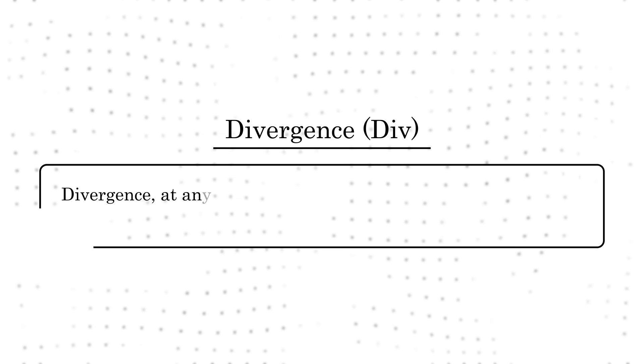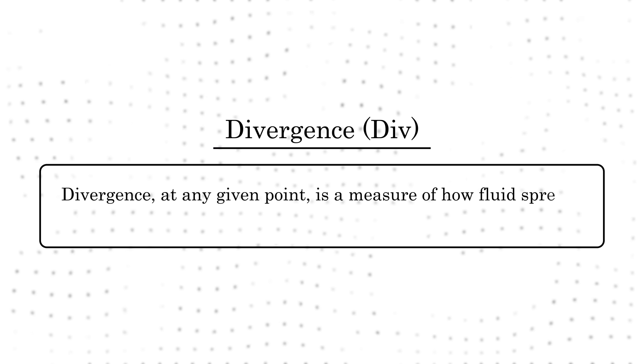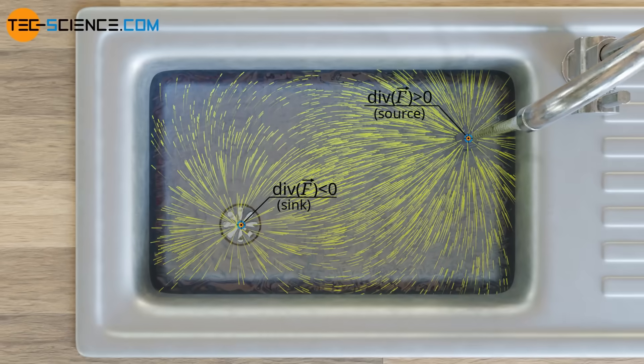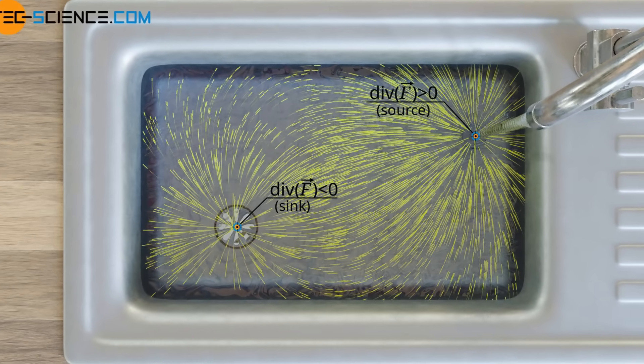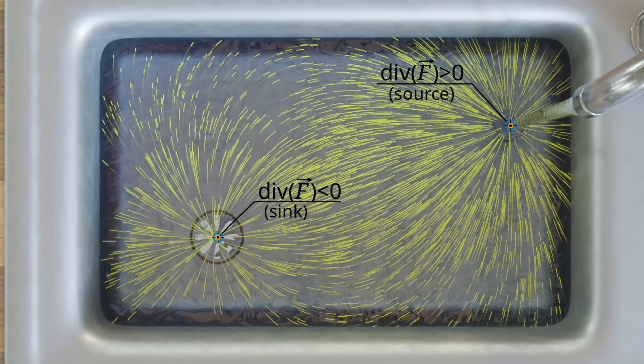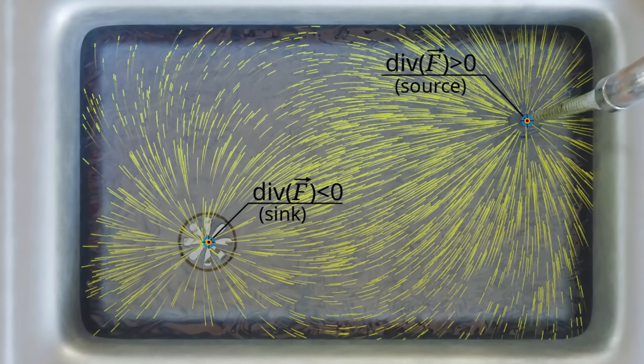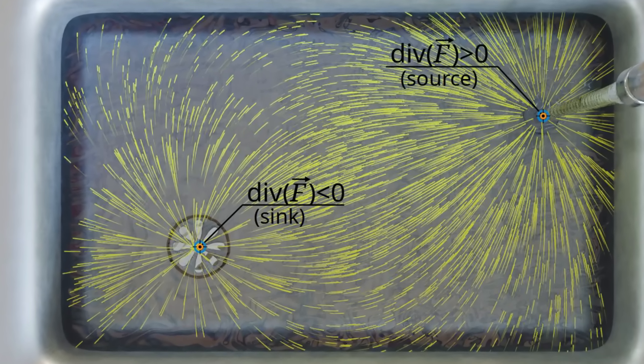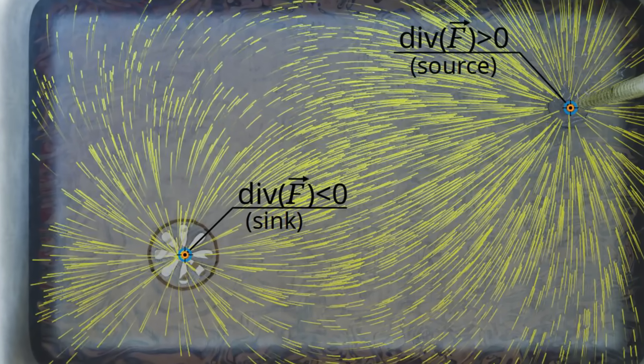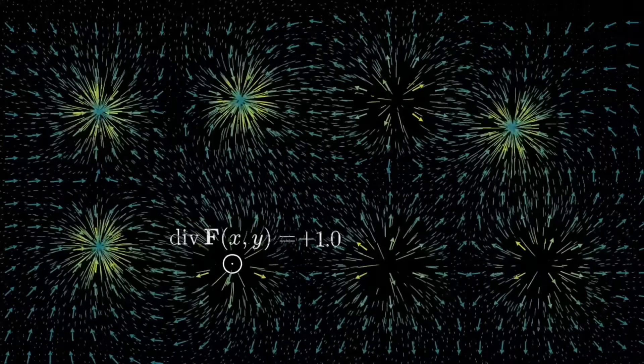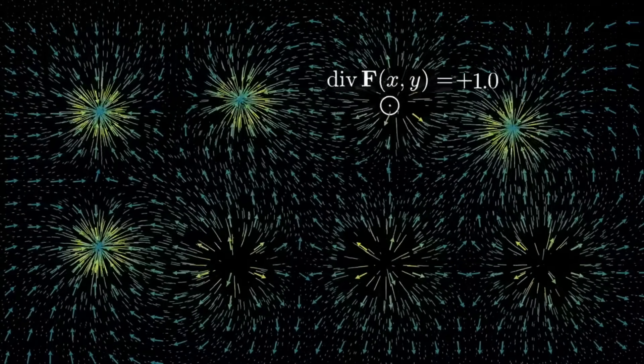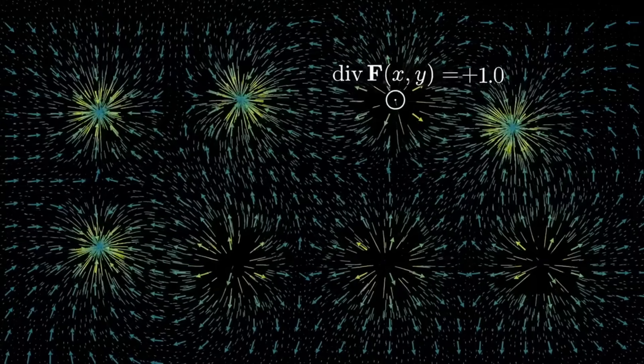Divergence, at any given point, is a measure of how fluid spreads out or comes together at that point. In this picture, you can see a source from where water is spreading out. The divergence at that point is positive. And you have a sink where the water is coming together. The divergence there is negative. Elsewhere, there's no spreading or gathering, and the divergence is zero. You can have multiple sources and sinks. Divergences are used everywhere in fluid dynamics, electromagnetism, and vector calculus.